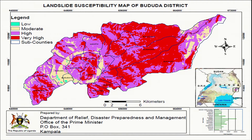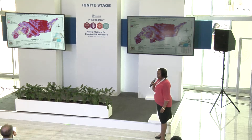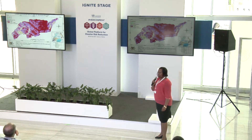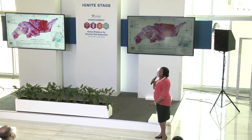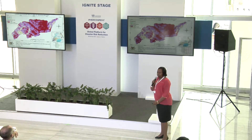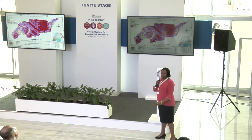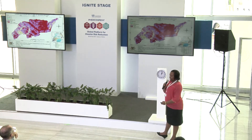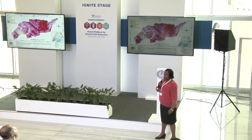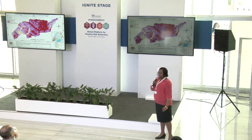A case in example is this map — a landslide susceptibility map. It was classified from very high to low, and it shows the sub-counties that are prone to risk. This part of the country is highly prone to landslides, and so far we have had fatal landslides in this part of the country, and we are conducting risk assessments.